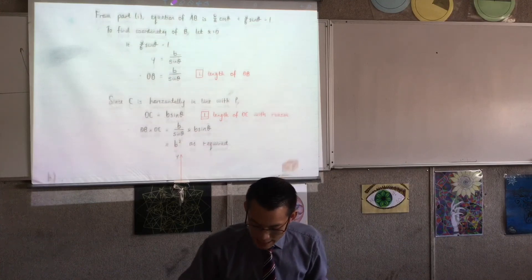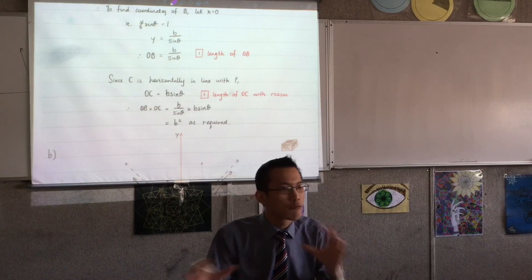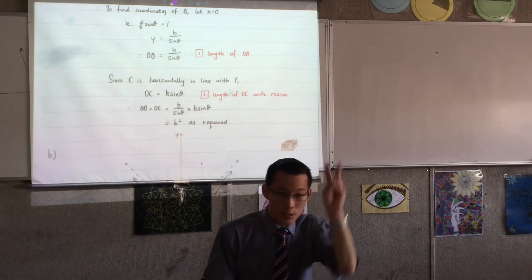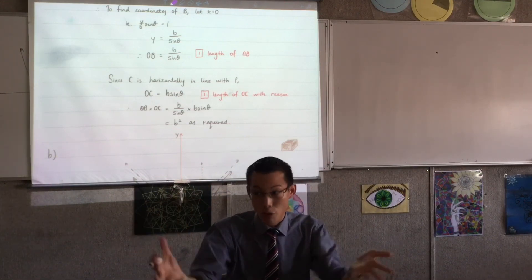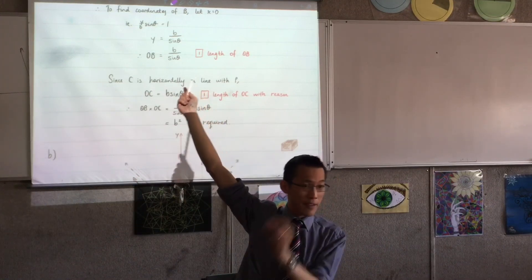You've got to get both lengths. A lot of people kind of did a poor job of finding what the lengths were or didn't reason why they were what they were. Two marks. Show me. Show me. The mathematics of it's not difficult. You have to reason through it.